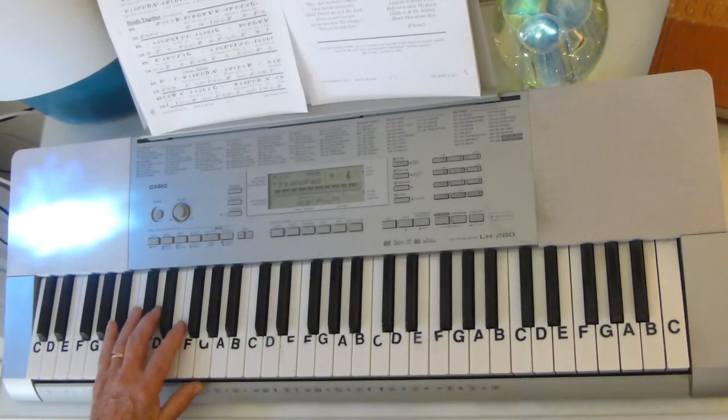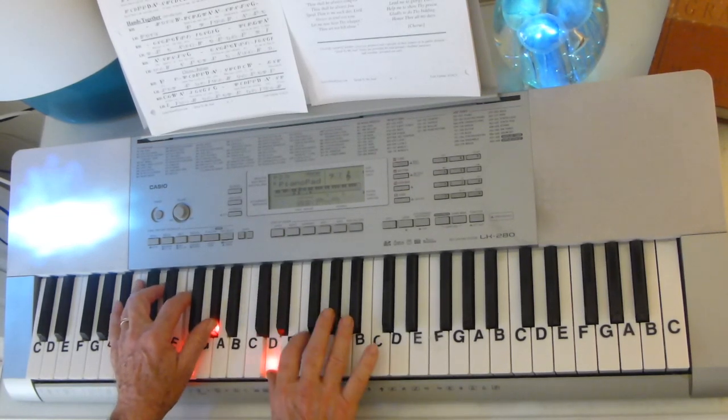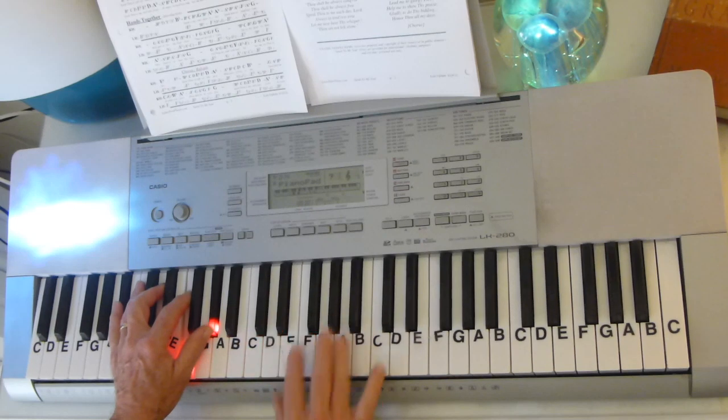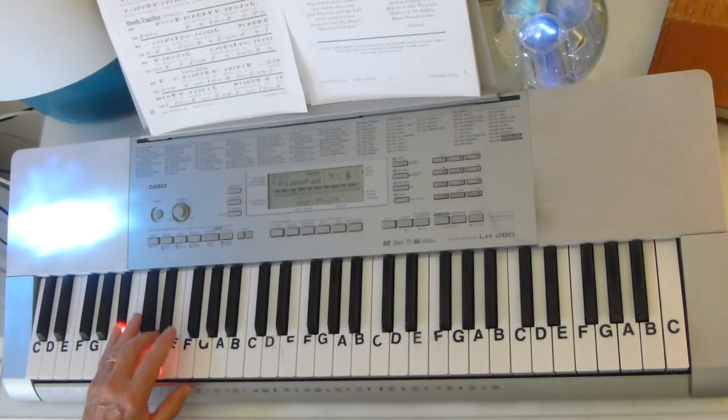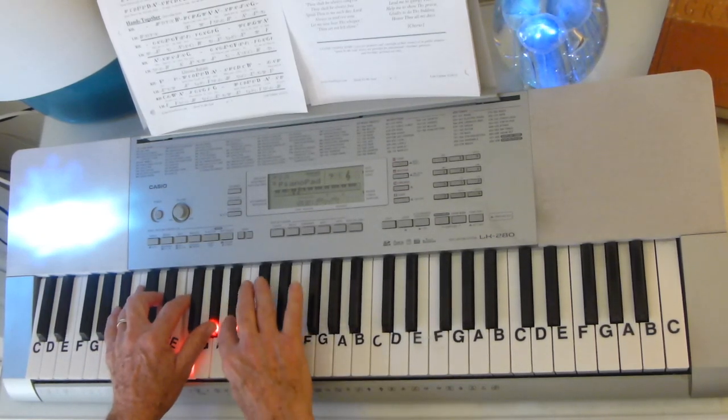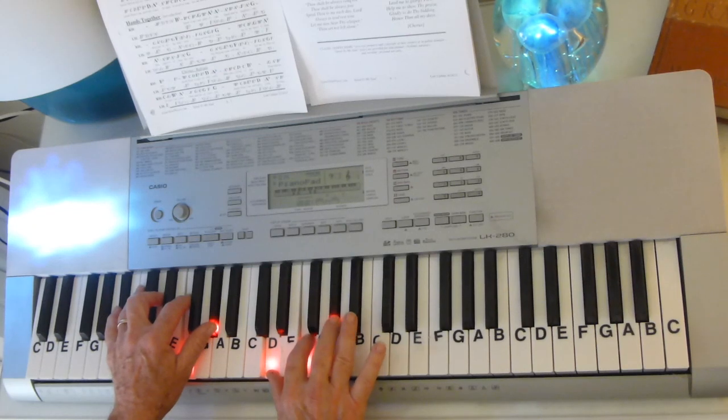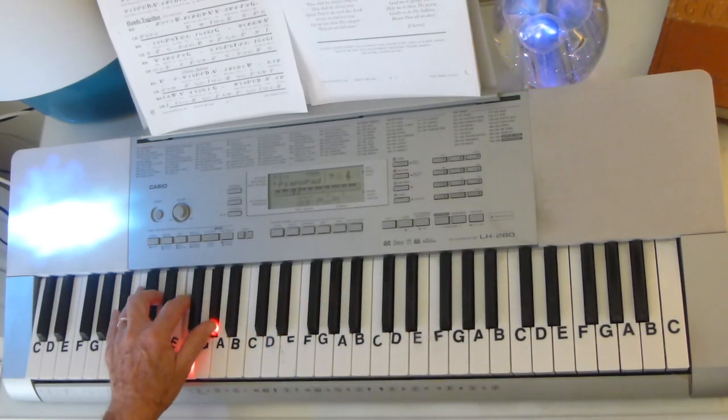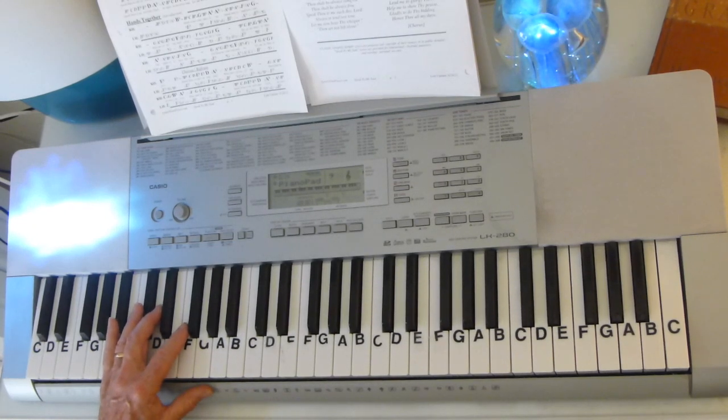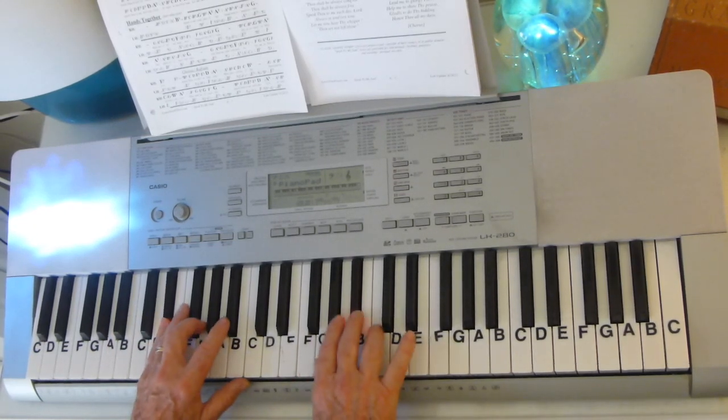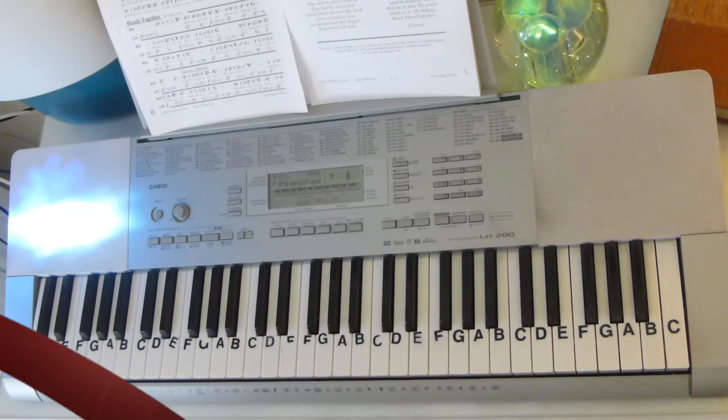And then for an introduction we'll just play a B-flat 7 chord and arpeggiate it. B-flat 7 is B-flat, D, F, A-flat, B-flat, D, F, A-flat, B-flat. So you've got a 1, 3, 5, 7. So that leads us right into the key of E-flat.